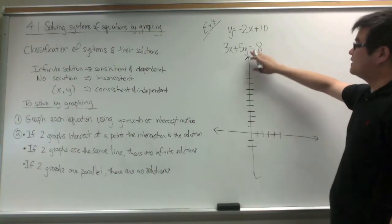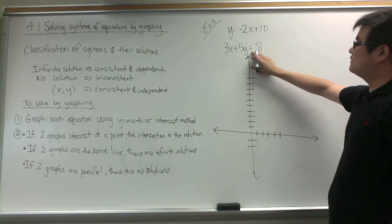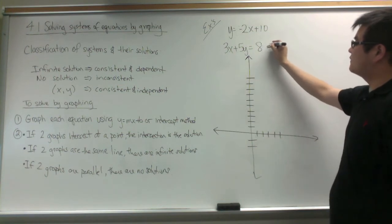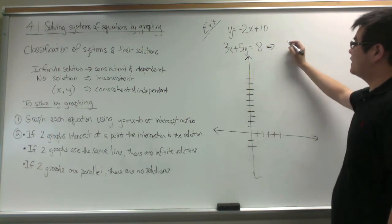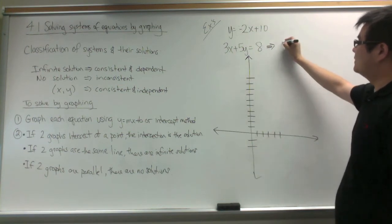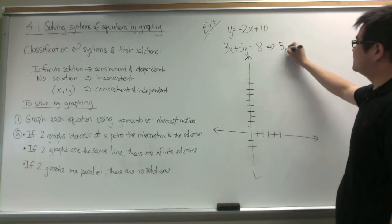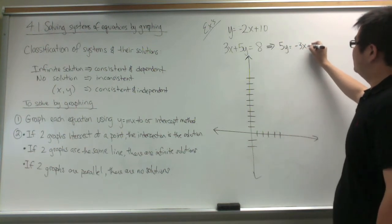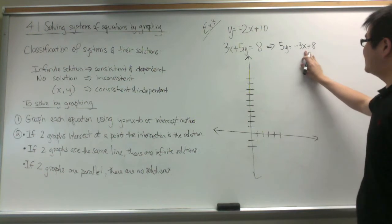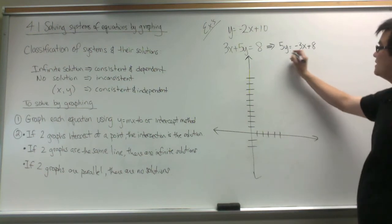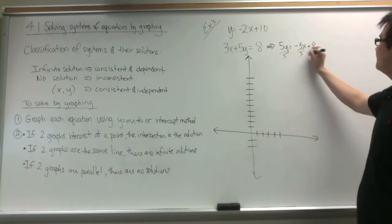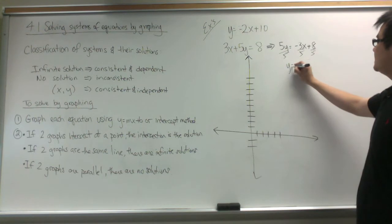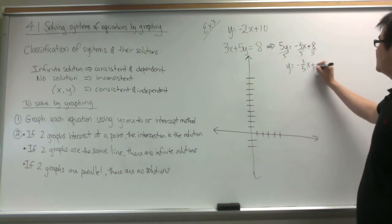In our next example, this one is in standard form, so I am going to solve it for y so that I can graph it in slope-intercept form. When I subtract 3x from both sides, I get 5y equals negative 3x plus 8. Then, divide everything by 5, so y is equal to negative 3 fifths x plus 1 and 3 fifths.